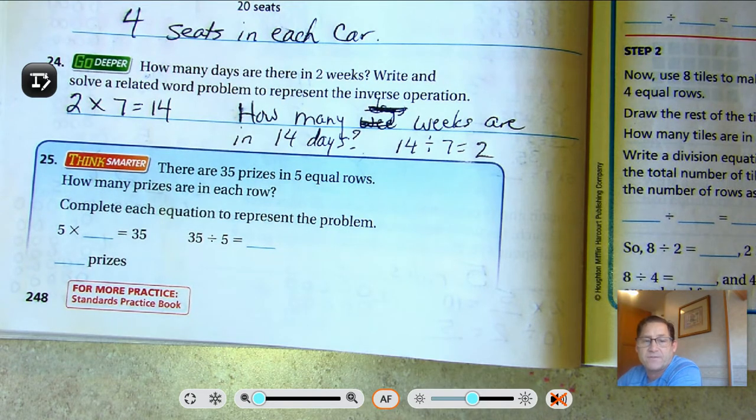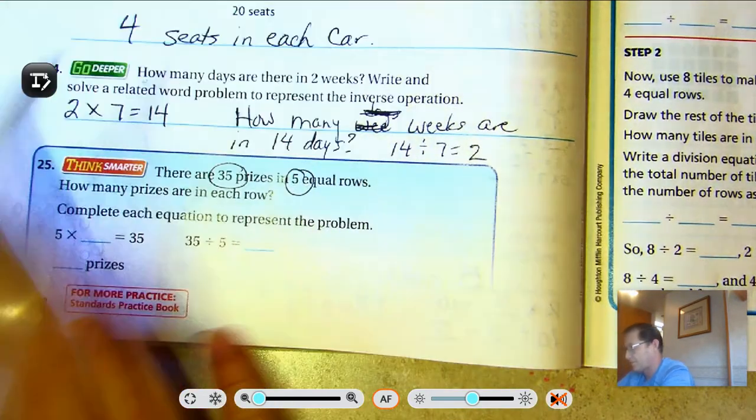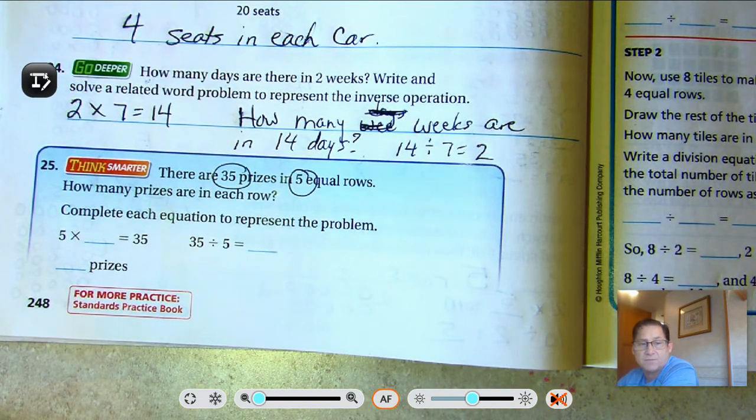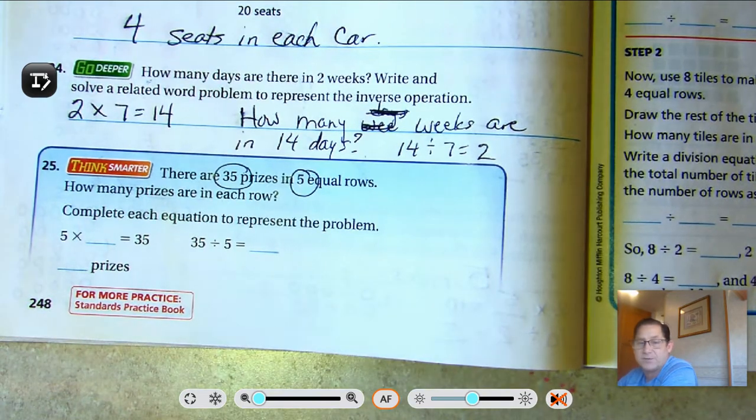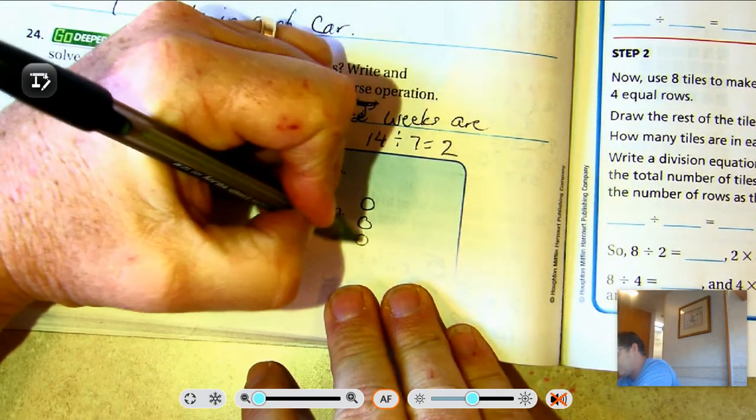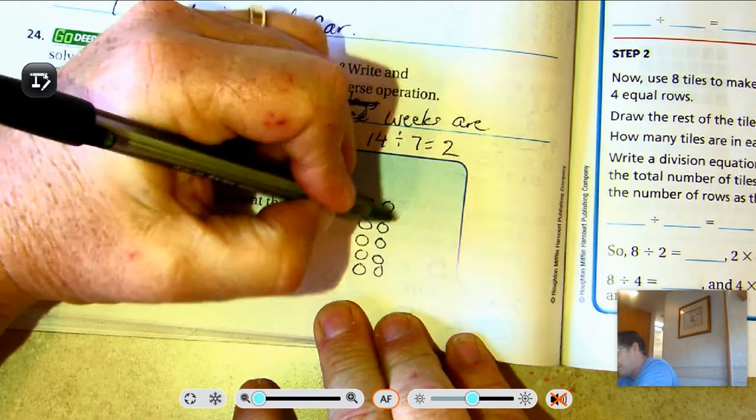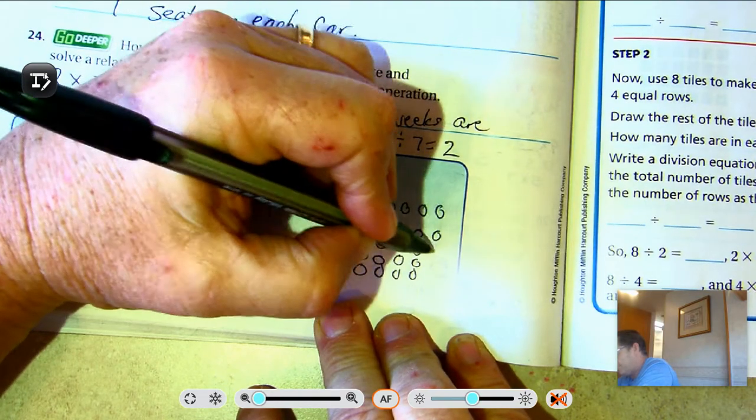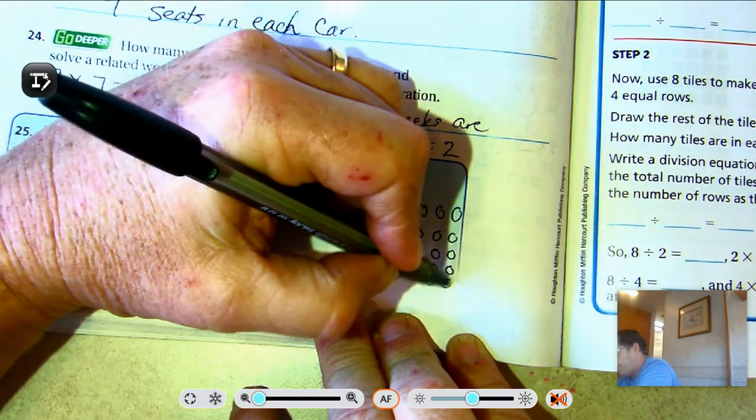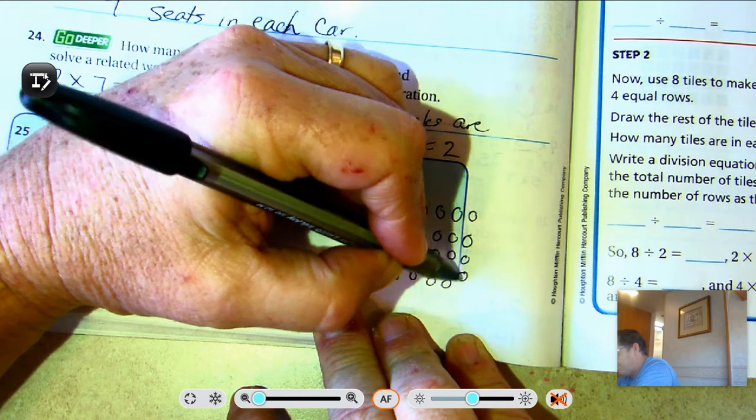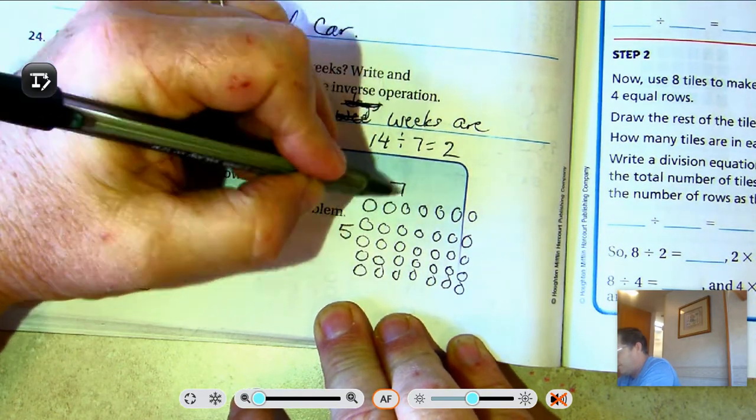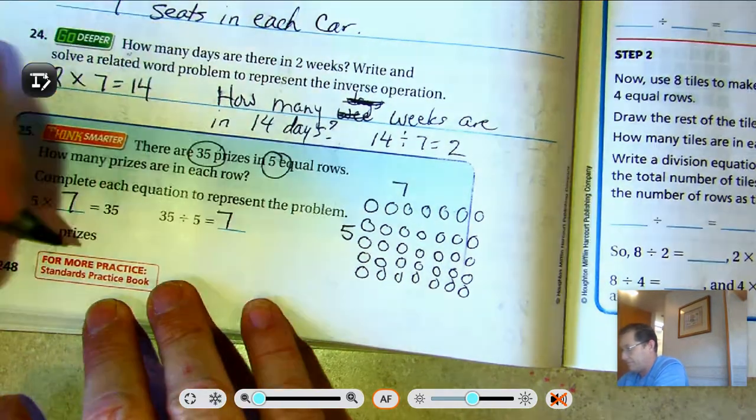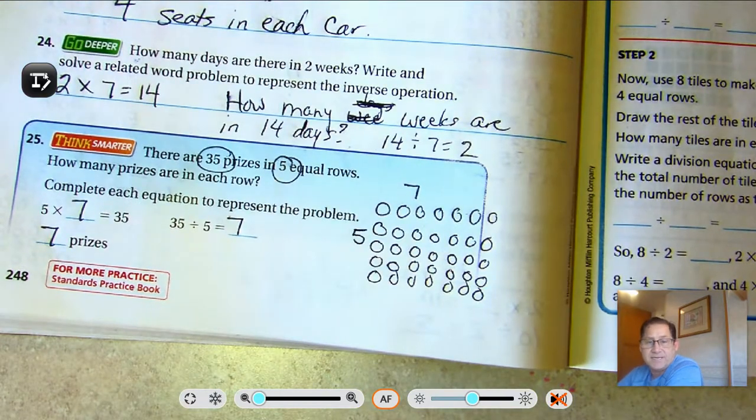And 25. There are 35 prizes in 5 equal rows. How many prizes are in each row? Complete each equation to represent the problem. 5 times what is 35? 5 equal rows. Counting by fives: 5, 10, 15, 20, 25, 30, 35. So 5 rows of 7. 5 times 7 is 35. 35 divided by 5 is 7. So there are 7 prizes in each row.